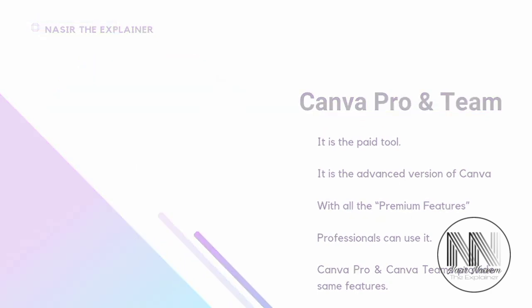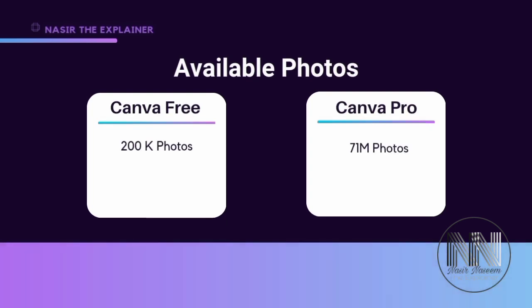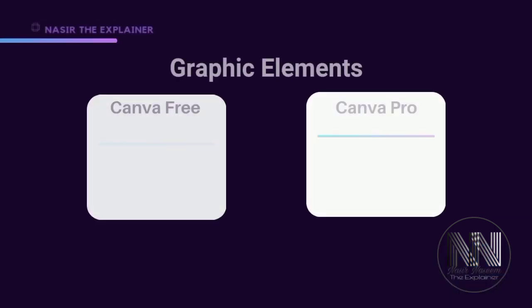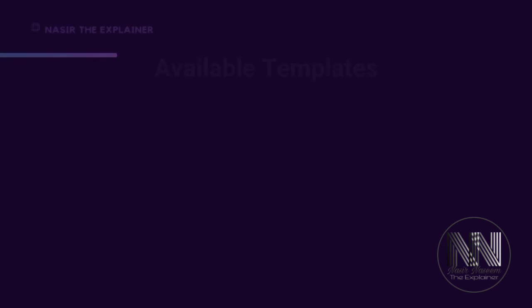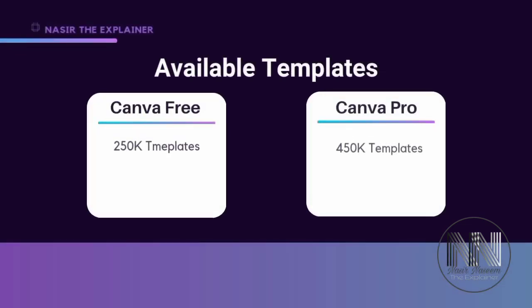In the free version, 200,000 photos are available, whereas in Canva Pro, 7 million photos are available. In terms of graphic elements, Canva Free offers only 57,000, whereas Canva Pro provides 4.5 million graphic elements.